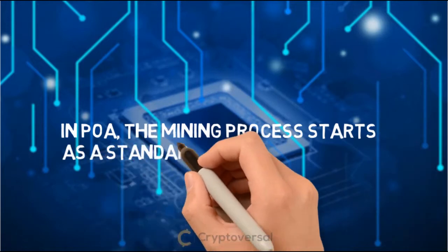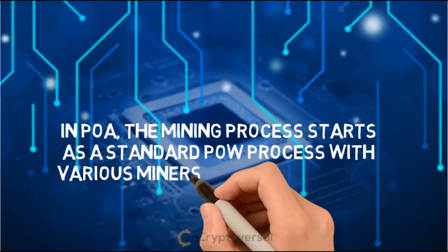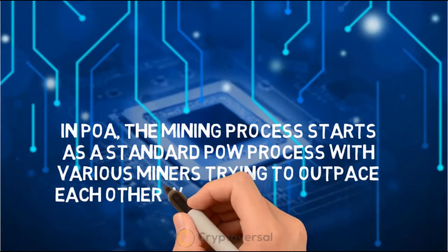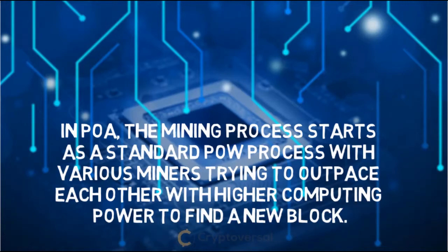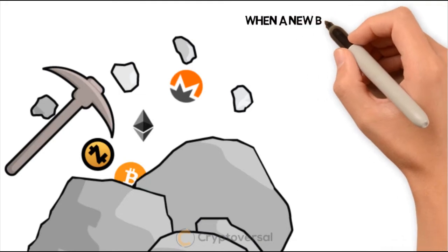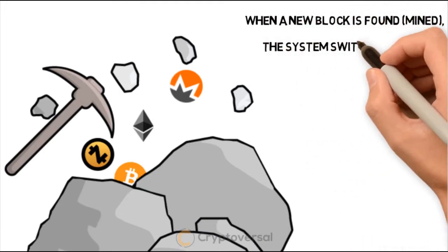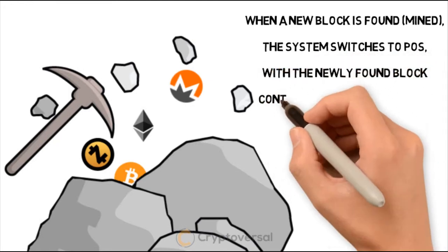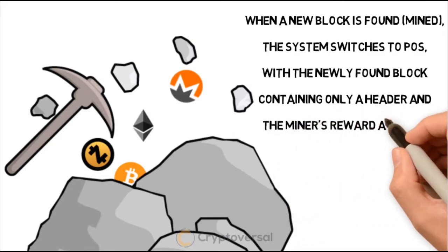In Proof of Activity, the mining process starts as a standard Proof of Work process, with various miners trying to outpace each other with higher computing power to find a new block. When a new block is found, the system switches to Proof of Stake, with the newly found block containing only a header and the miner's reward address.